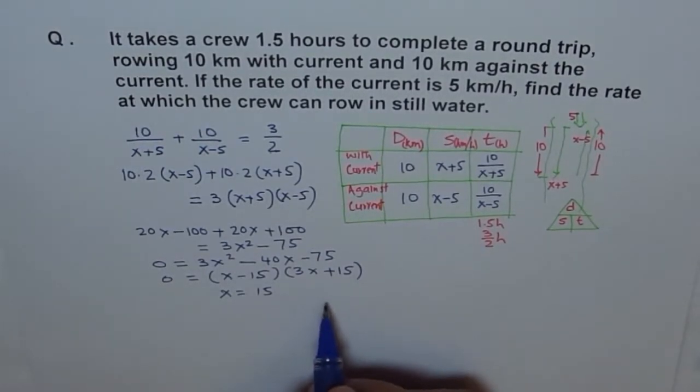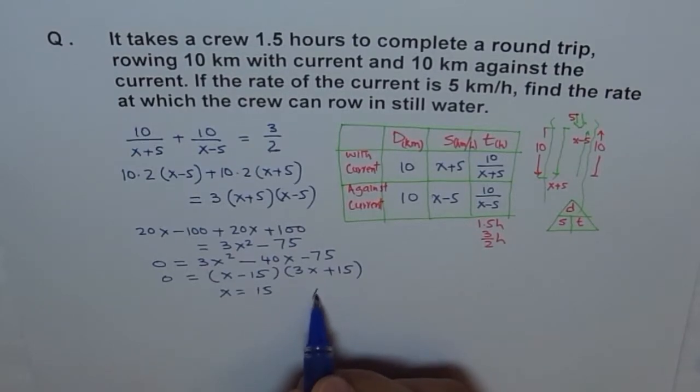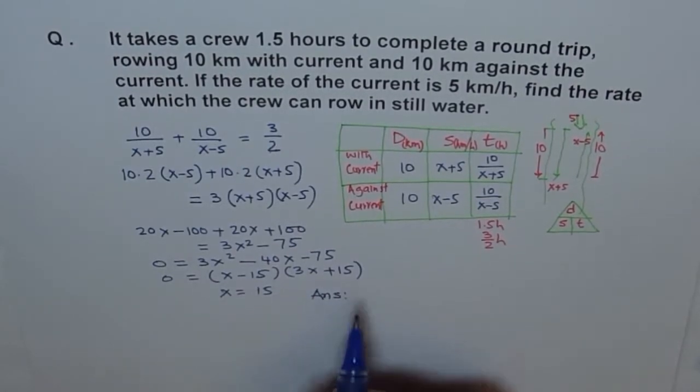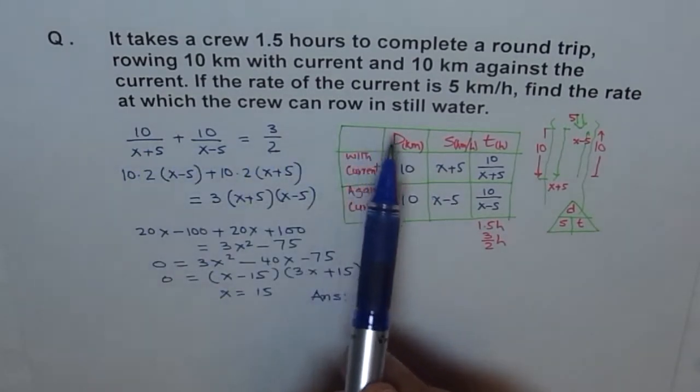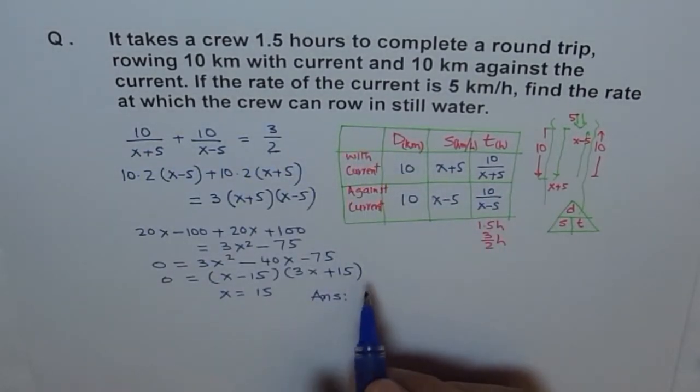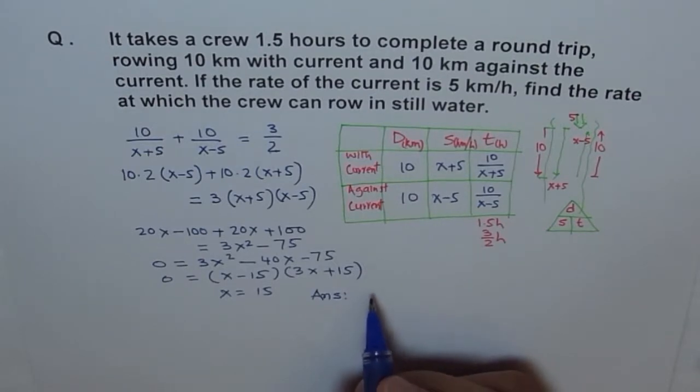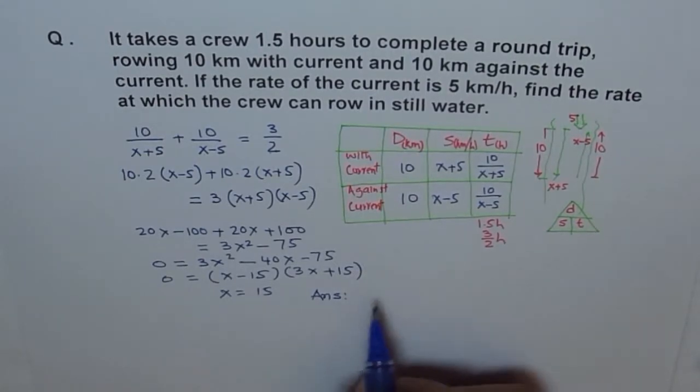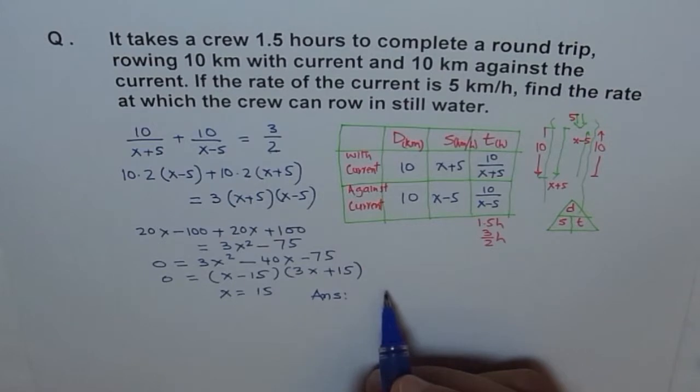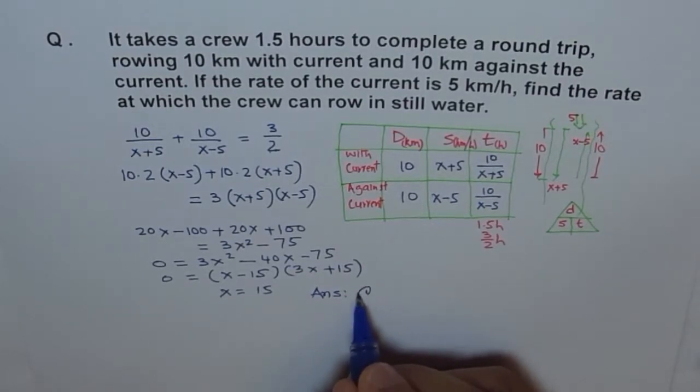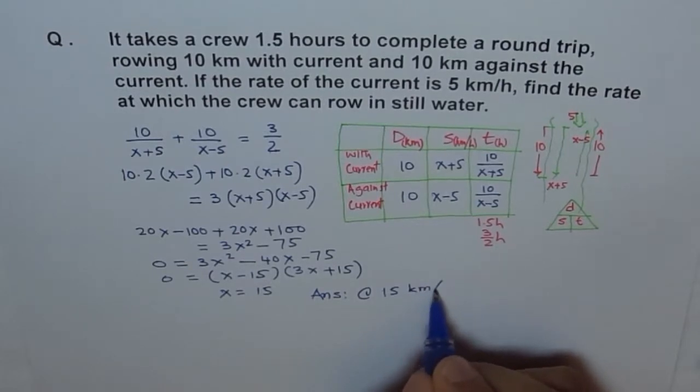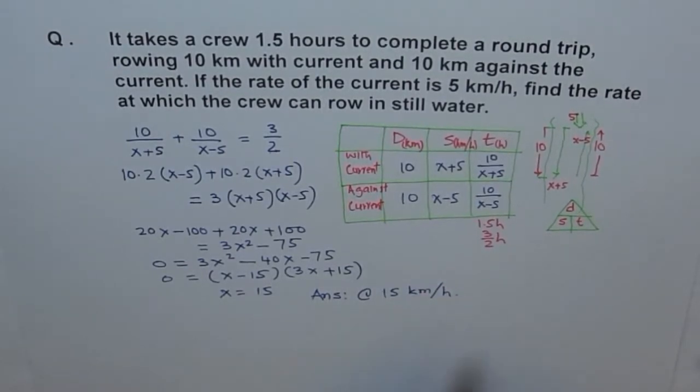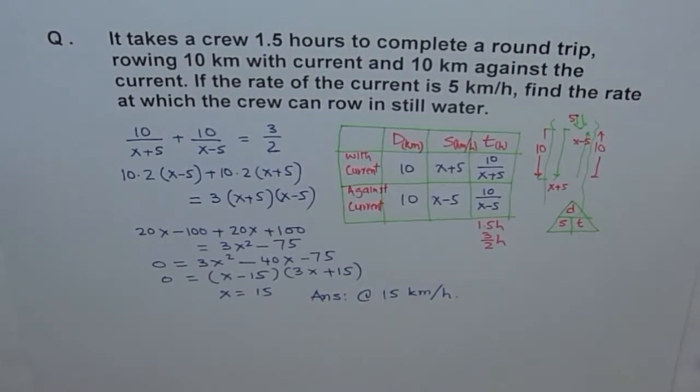So, the next step is to write your answer very clearly. So, we'll say, answer here is, it says, find the rate at which the crew can row in still water. So, we'll say, the rate at which the crew can row in still water is 15, don't forget the units, kilometers per hour. So, I'll say, rate is 15 kilometers per hour. But you have to write the full statement. Don't forget that.